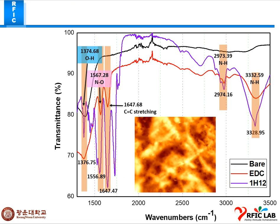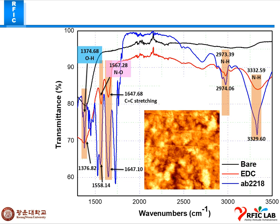This is the FTIR spectra for the urine biosensor. We are using two different kinds of antibodies, which show very good peaks across five different features. We will include these results in the final paper. The second antibody is AB2218.